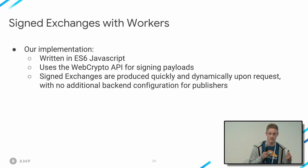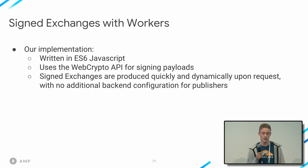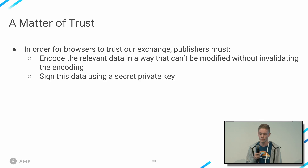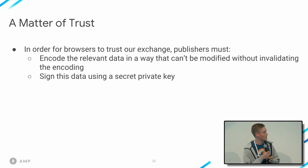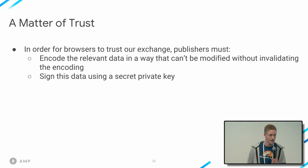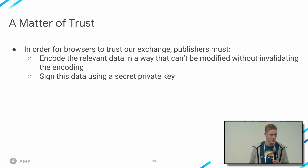The worker we've developed to tackle signed exchanges is written in modern ES6 JavaScript. It uses the Web Crypto API for signing payloads and is able to dynamically serve signed exchanges for AMP publishers with no backend configuration. There are two things we have to accomplish before browsers can accept that the AMP document is originally from the publisher: we have to encode the data in a way that can't be modified, and we also have to sign this encoded data using a private key.